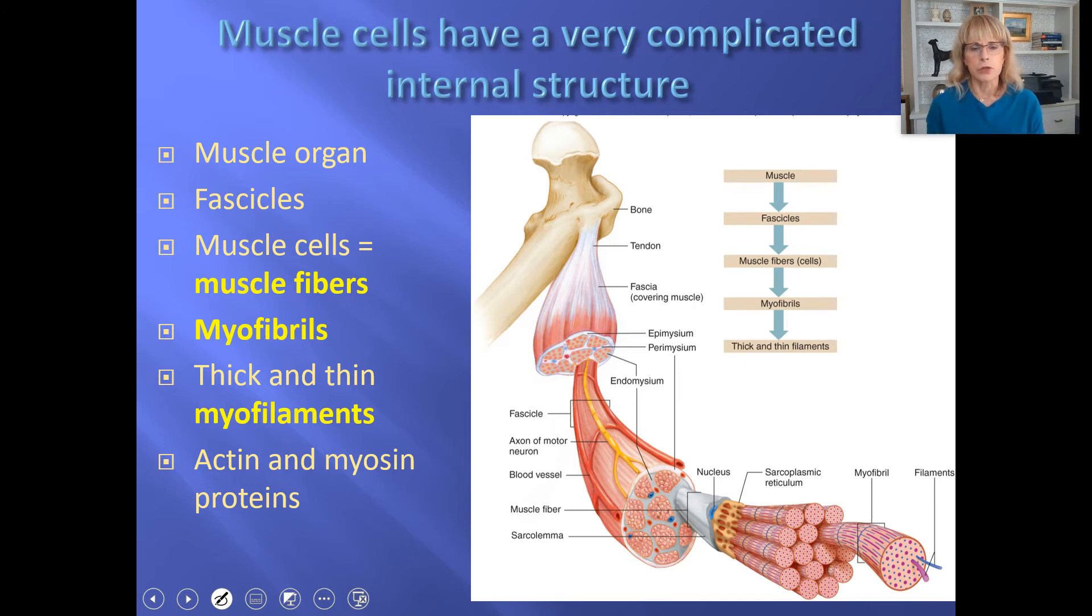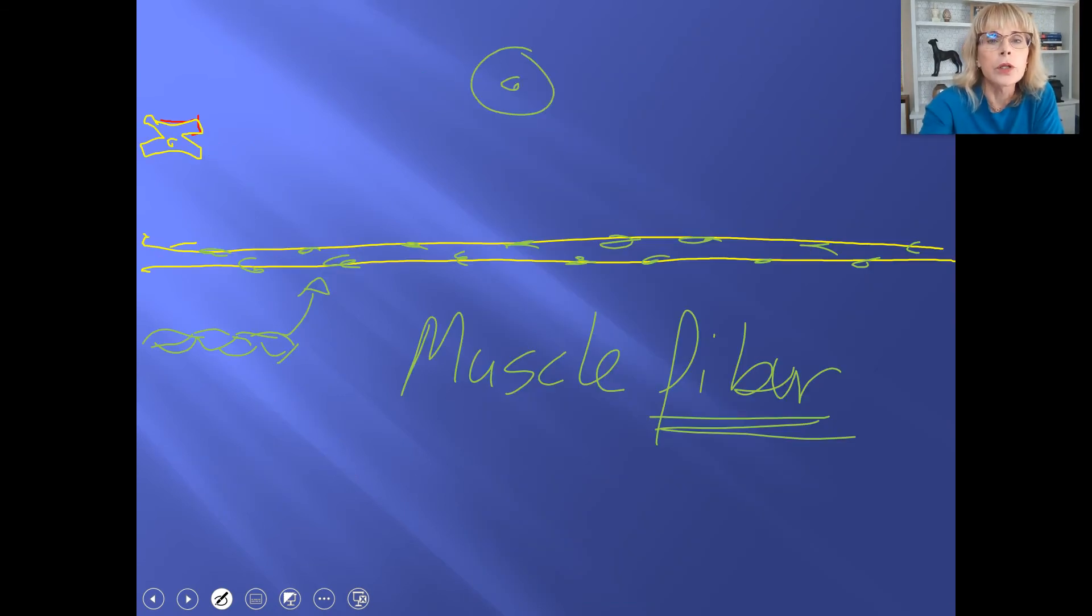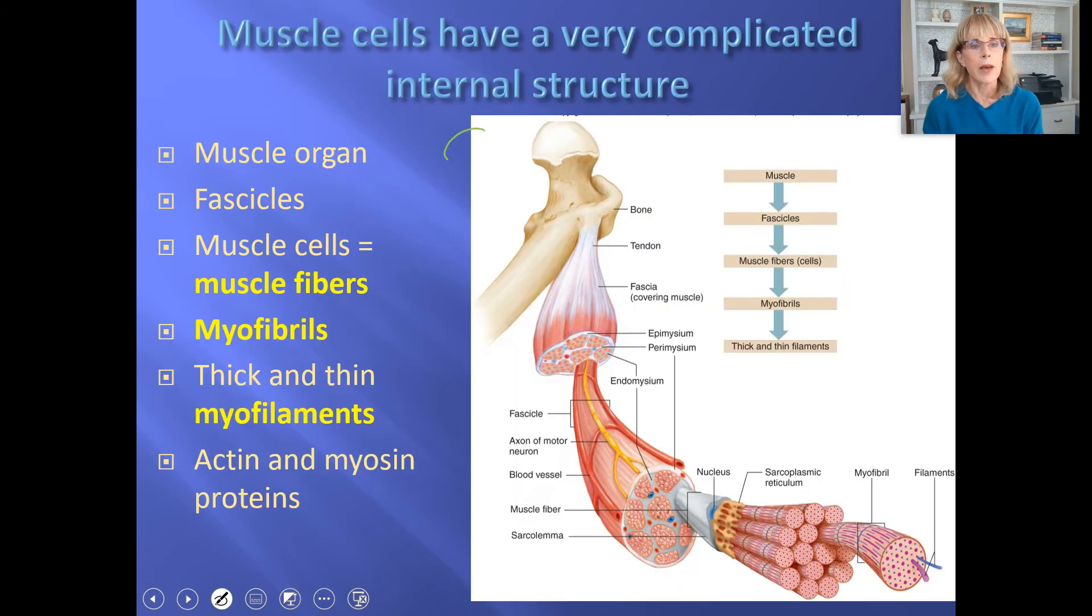Now, muscle cells have a very complicated internal structure. Whenever I teach cell biology, I try and warn students that that sort of stereotypical cell that we're looking at, that is round and it's got a nucleus, almost no cells in the human body really look like that. And that's because that's some sort of general jack-of-all-trades kind of cell. And human cells are all specialized, and so they've got specialized structure. I think nowhere is that more dramatically seen than in muscle cells and nerve cells. They are really, really dramatic.